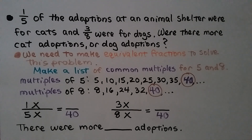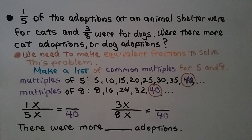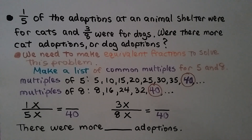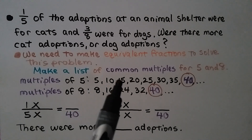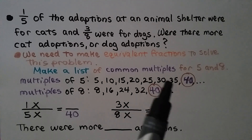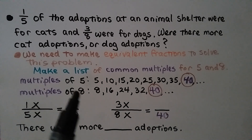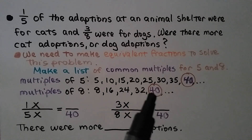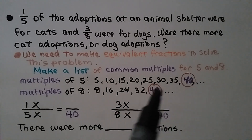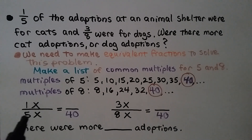One-fifth of the adoptions at an animal shelter were for cats, and three-eighths were for dogs. Were there more cat adoptions or dog adoptions? We need to make equivalent fractions to solve this. We list common multiples of five and eight — the denominators. Multiples of five: 5, 10, 15, 20, 25, 30, 35, 40. Multiples of eight: 8, 16, 24, 32, 40. The lowest common multiple is forty.